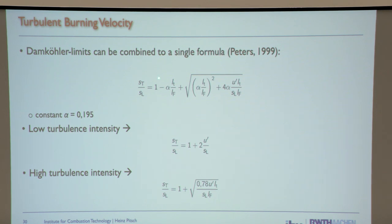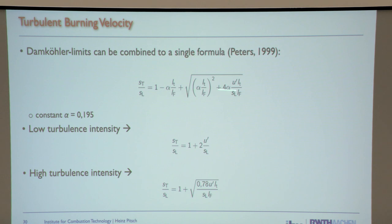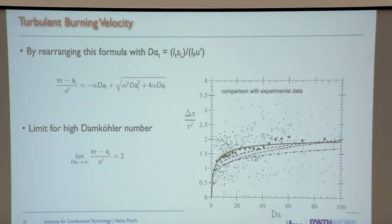Peters provided a unified relation that includes both the large-scale and small-scale limits, written as a function of the Damköhler number. Taking the limit as Damköhler goes to infinity gives the corrugated flame regime; the limit as Damköhler goes to zero gives the thin reaction zones regime.